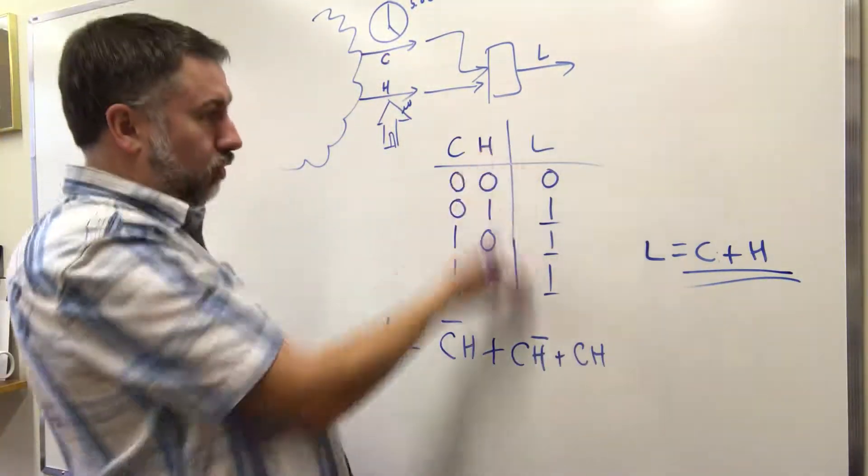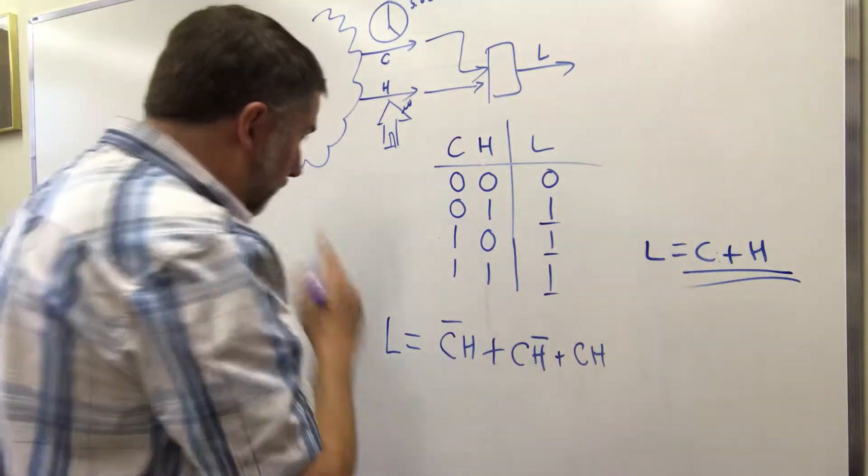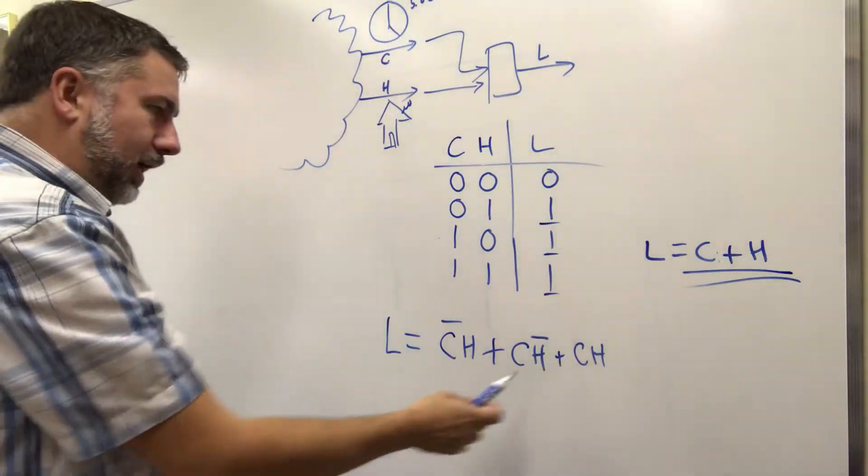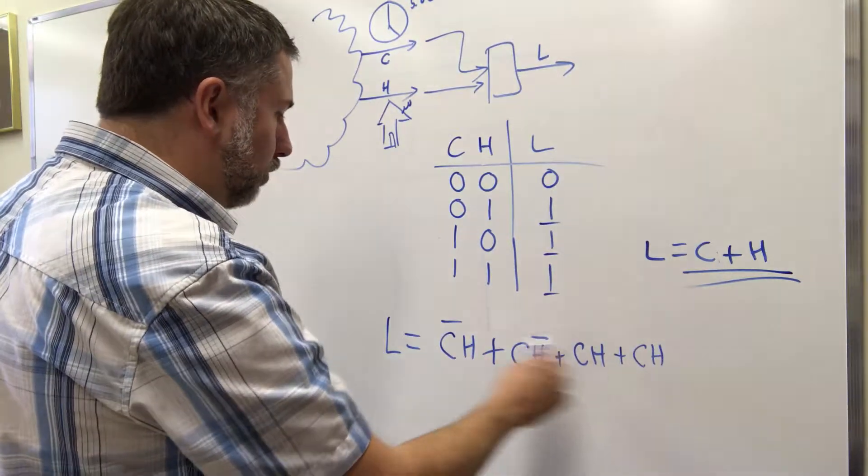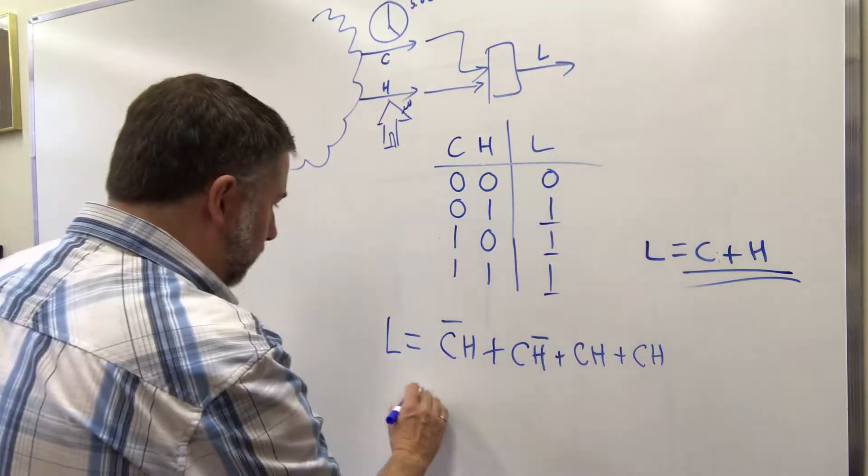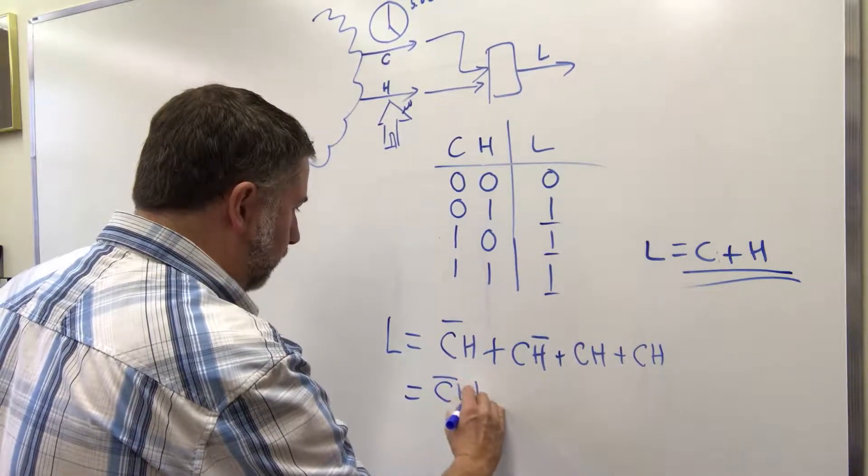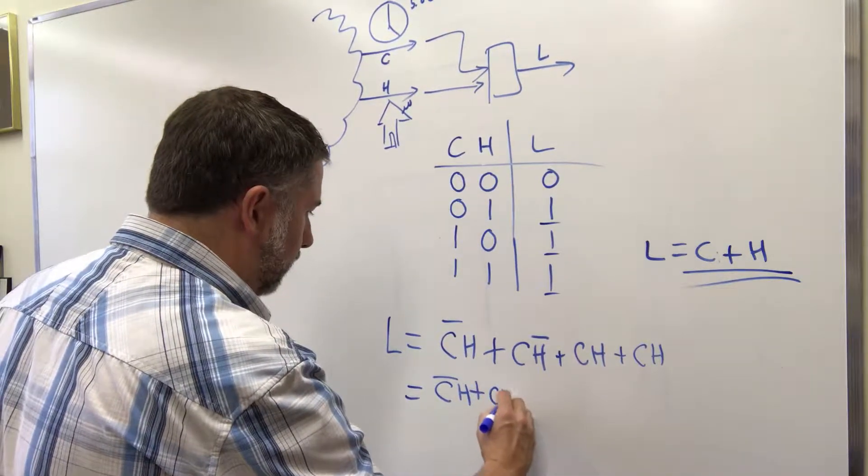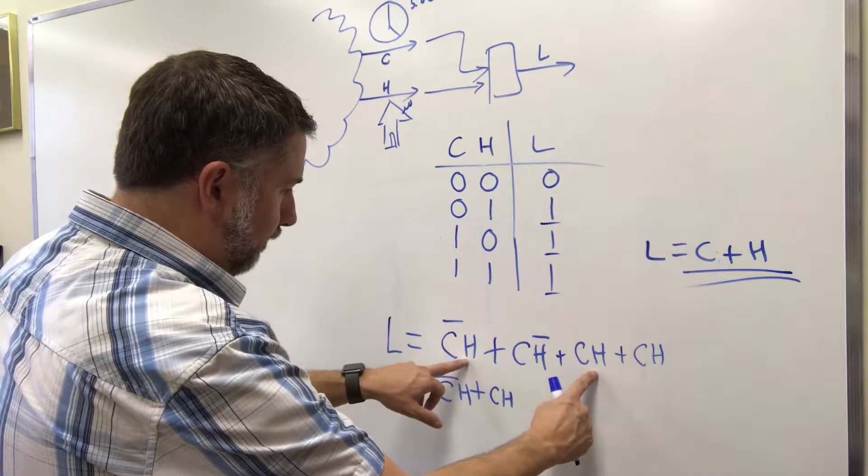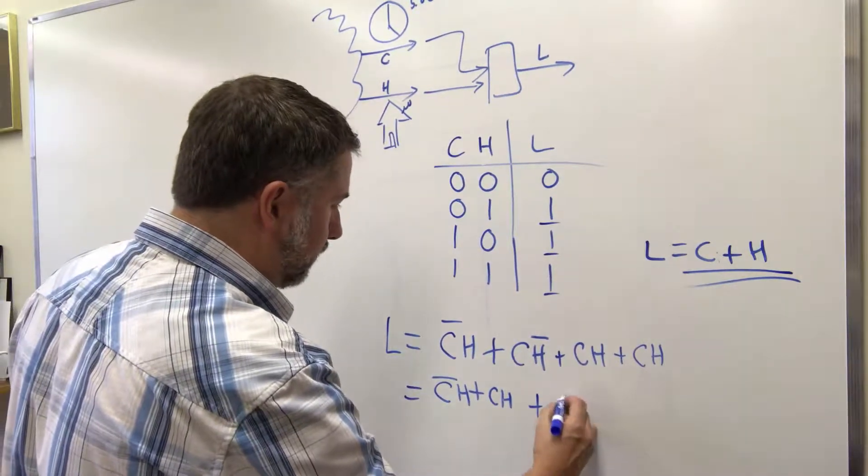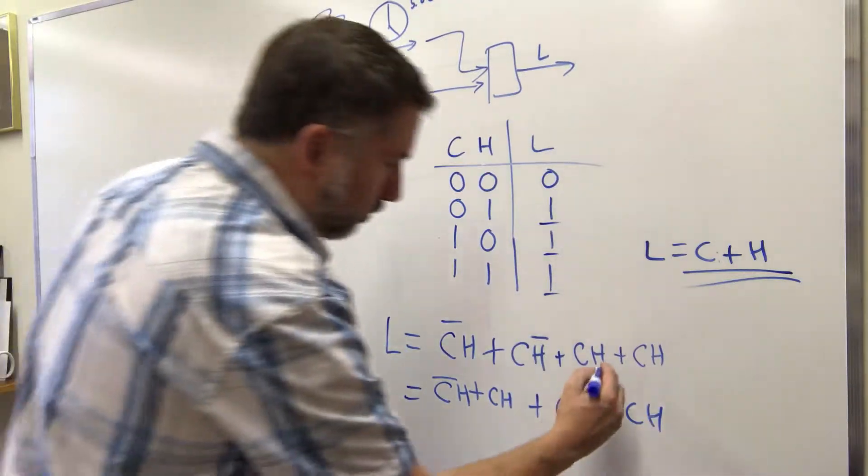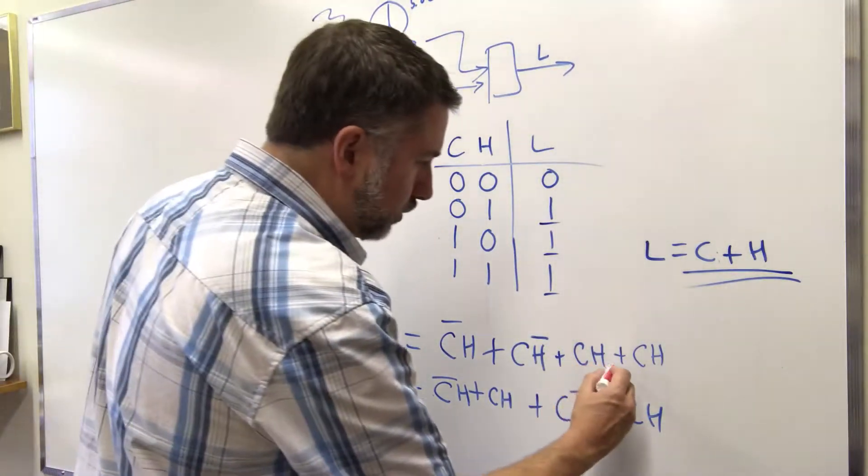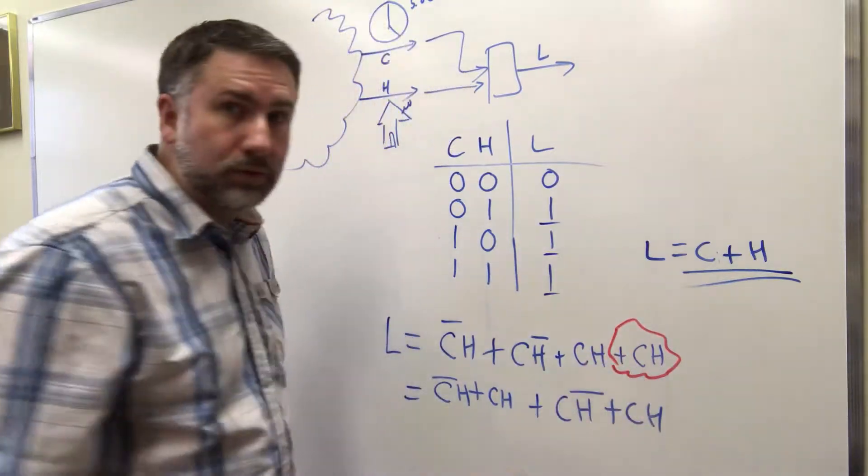Alright, so let's try to simplify it. We can duplicate this term, and then we can pull into here. This equals C'H plus CH, so we're just rearranging terms, and then CH' or CH. So we've duplicated this, and it's a good idea to indicate using the rules. This is idempotent.